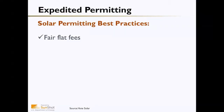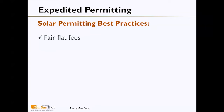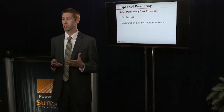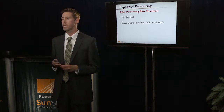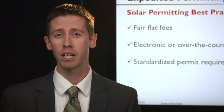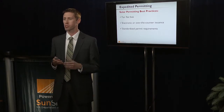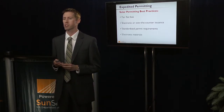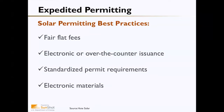Solar permitting best practices include: first, a fair and flat fee process, with fees generally based on the cost incurred by the municipality to process the permit. Second, electronic or over-the-counter issuance of permits — as municipalities update their permitting processes to go online or create a fast-track over-the-counter system, solar should be included. Third, standardized permit requirements — since roughly 80 to 85 percent of all small rooftop homeowner PV systems are generally the same, there are real opportunities to standardize forms and create a checklist. Finally, making all electronic materials and checklists available online is another way to expedite the process.